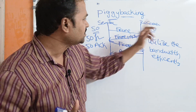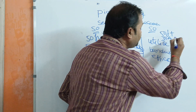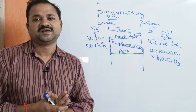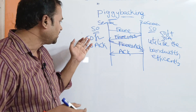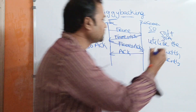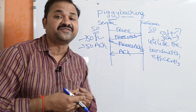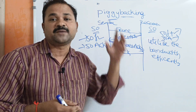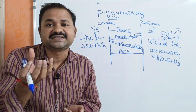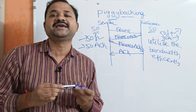Without piggybacking, the sender sends 50 frames and 50 acknowledgements separately, and likewise the receiver also sends 50 frames and 50 acknowledgements separately. This means 200 transmissions total, which uses much more bandwidth. If we want to utilize bandwidth in an efficient manner, then we have to go for piggybacking.